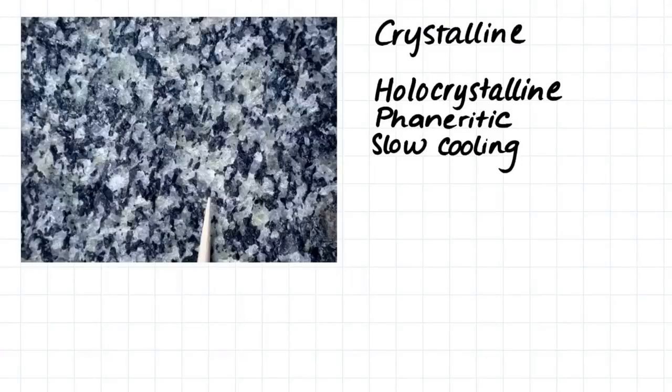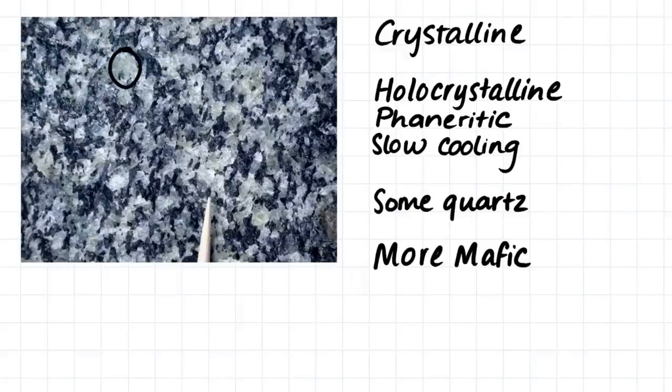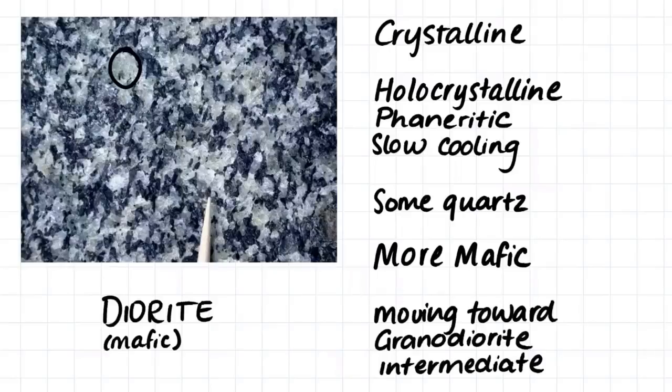This sample is holocrystalline, has a phaneritic texture, and therefore cooled slowly underneath the earth. The sample has some quartz, however it still contains a lot of dark minerals and I would say that it is more mafic than felsic. I would say that this sample is diorite, however it is moving towards being a granodiorite, which is an intermediate rock.